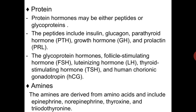The glycoprotein hormones include follicle stimulating hormone (FSH), luteinizing hormone (LH), thyroid stimulating hormone (TSH), and human chorionic gonadotropin hormone.